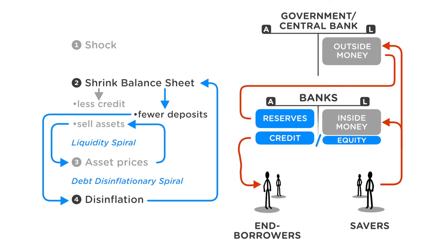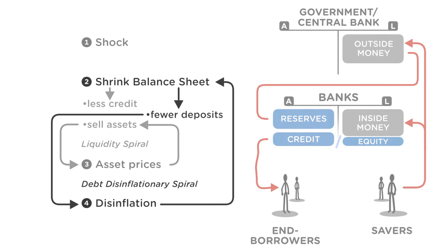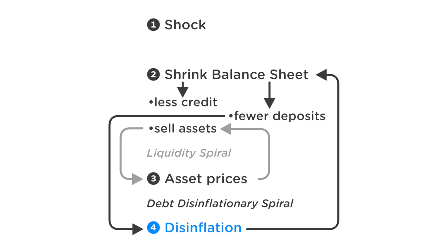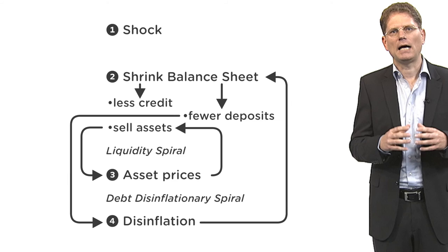To recap, we have separated the shock into four steps, which of course occur simultaneously. First, there was an initial shock that impaired the assets. Second, the response of the banks was to shrink the balance sheets, cut back on new loans, and fire-sell the old outstanding credit. Third, this led to a liquidity spiral, lowering asset prices and forcing further sell-offs. Fourth, the decline in the supply of inside money and the rise in demand for money led to disinflation, which increased the real value of debt that banks owe to the savers. All this significantly lowered banks' equity and gave rise to risk premiums.